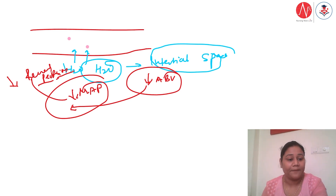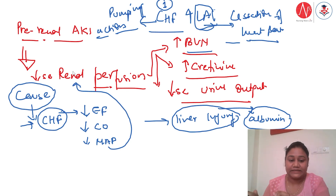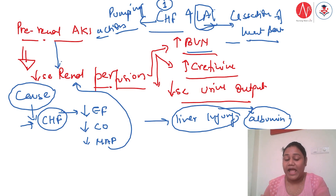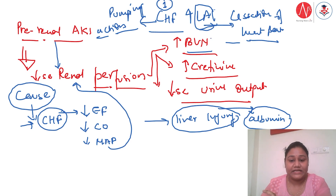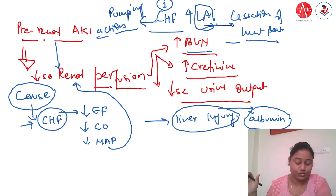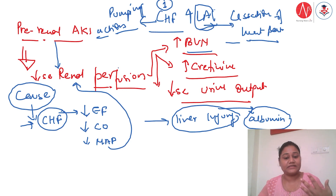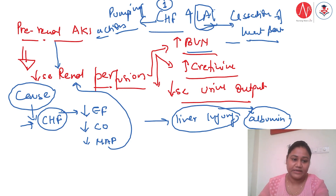If albumin is not produced sufficiently due to liver injury, water cannot be retained in the intravascular space and moves into the interstitial space, accumulating there. This results in decreased arterial blood volume and decreased mean arterial pressure, which further causes decreased renal perfusion — another reason why the kidney receives less blood supply in pre-renal stage.